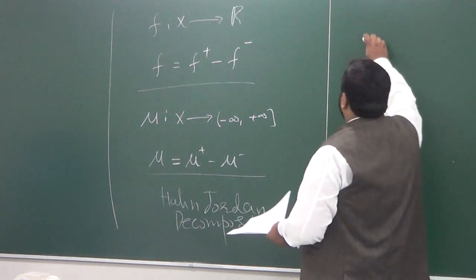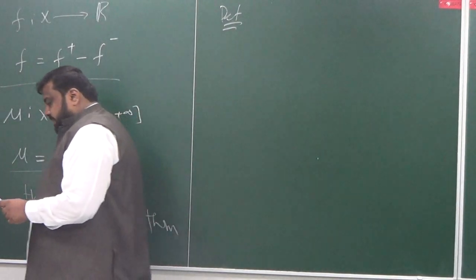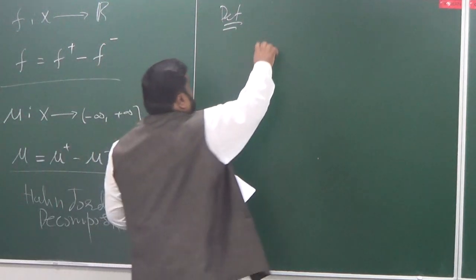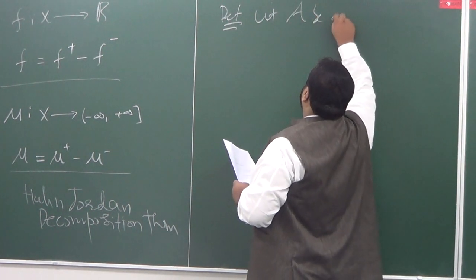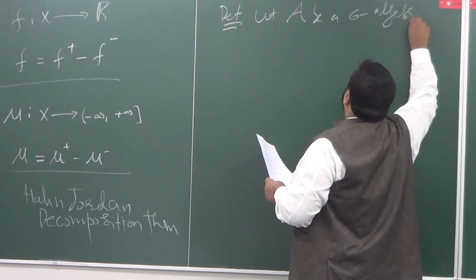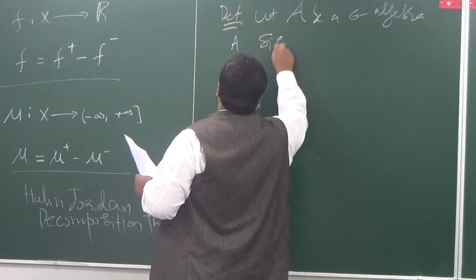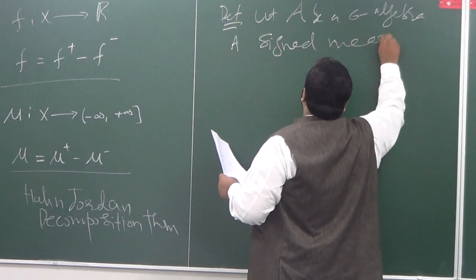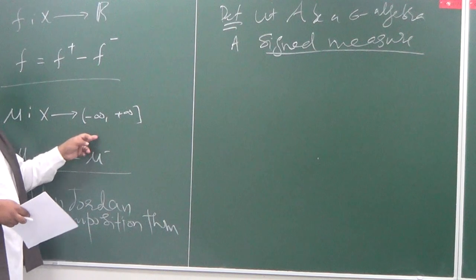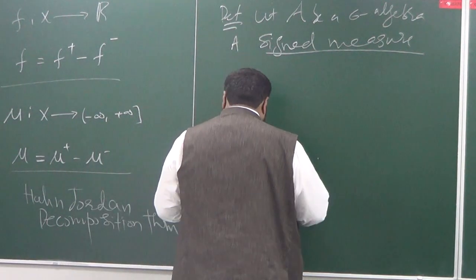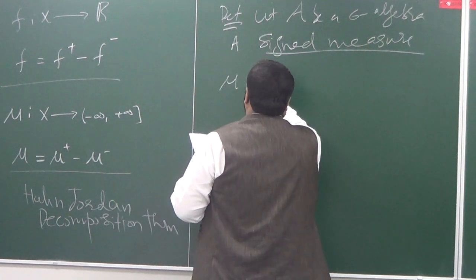Let me begin with a set of definitions. Consider an example: imagine you have a sigma algebra and an assigned measure. A signed measure is a map from the sigma algebra into minus infinity to plus infinity.